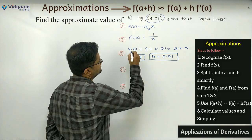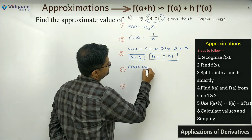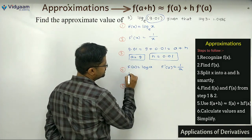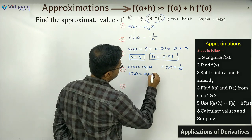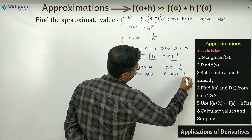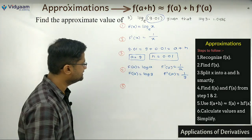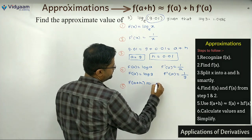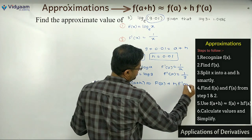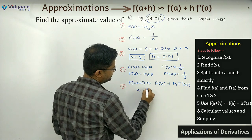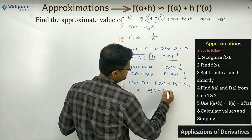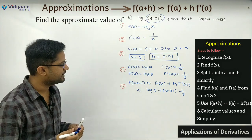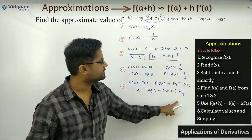In step 4: f(a) = log a and f'(a) = 1/a. Substituting a = 9: f(a) = log 9 and f'(a) = 1/9. Now apply the master formula: f(a + h) ≈ f(a) + h·f'(a). Substituting: log 9 + 0.01 × (1/9). We don't have a direct value of log 9, so we need some adjustment.